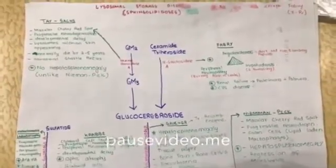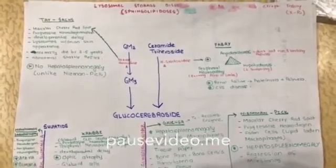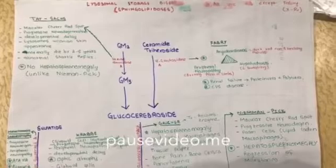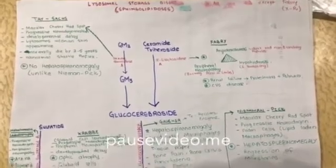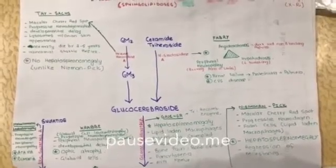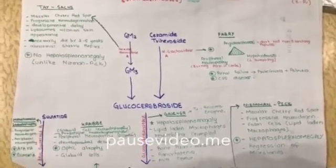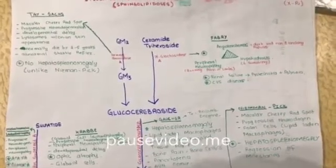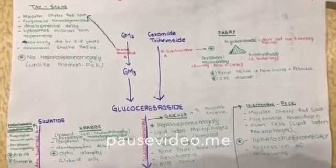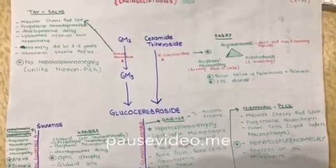In Tay-Sachs and Niemann-Pick Disease, there is a cherry red spot on the macula. The difference between these two is that in Niemann-Pick Disease there is hepatosplenomegaly, but in Tay-Sachs Disease there is no hepatosplenomegaly. In Tay-Sachs Disease, the lysosomes have an onion skin appearance, and there is an abnormal startle reflex.